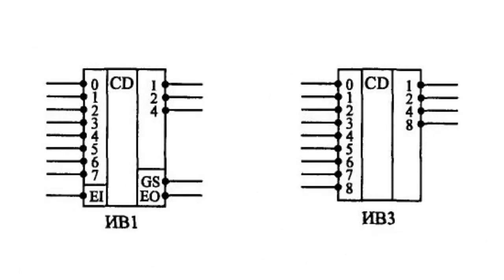In schematics, inputs of scramblers are numbered by consecutive decimal digits: 0, 1, 2, 3, etc. The outputs are indicated as the weight of the binary output variables like 1, 2, 4, etc.